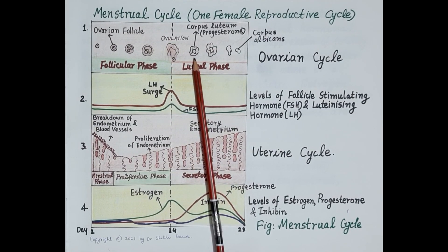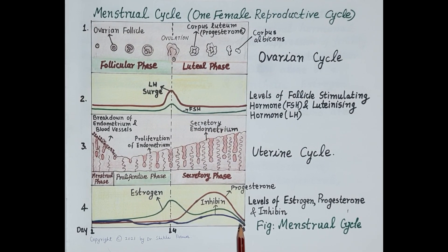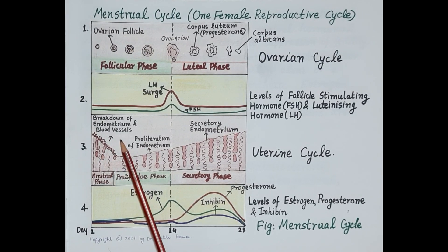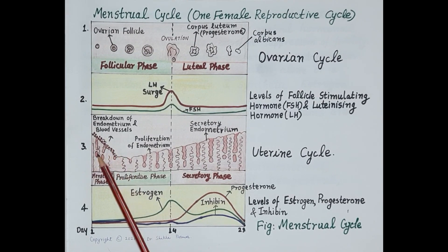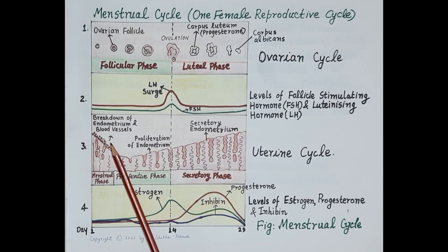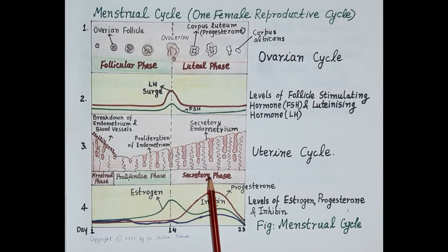If the egg is not fertilized, the corpus luteum degenerates, and the levels of progesterone and estrogen fall. This sharp decline causes breakdown of the endometrium and blood vessels, and endometrial tissue and blood pass from the uterus into the vagina as menstrual flow. This phase lasts around four to five days. Menstruation signifies that no pregnancy has occurred, and is followed again by the proliferative and secretory phases, beginning a new menstrual cycle.